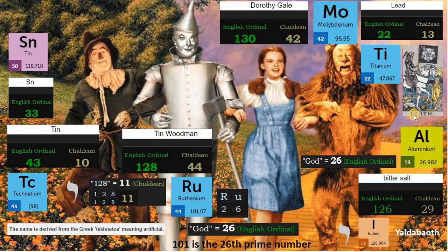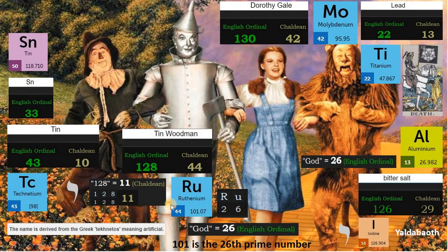In this slide I will decode Tin Woodman. Tin Woodman is 128 in English ordinal. 128 is an 11, matching the Moose card leading to God, plus the sodium element leading to Lucifer, the Devil, the yod, and Titan. We have 44 in Chaldean, matching element ruthenium. Its atomic mass is 101, and this is prime number 26, like God. RU is also 26. Tin is element 50.